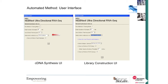A drop-down menu controls which workflow you're running — either cDNA synthesis or library construction. If doing cDNA synthesis, you have the option of performing the poly-A enrichment. If you're starting with purified mRNA or ribo-depleted messenger RNA, you simply uncheck this box.